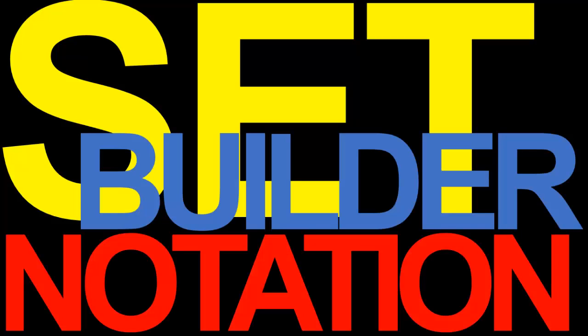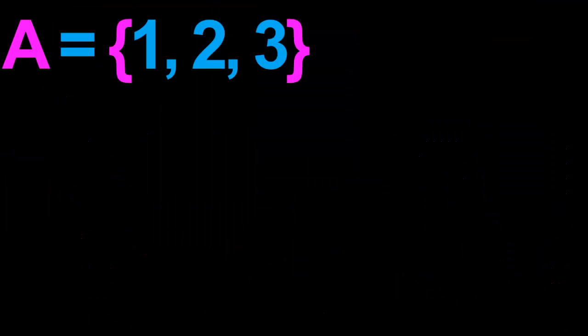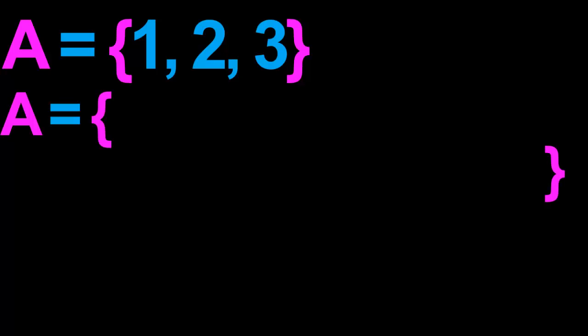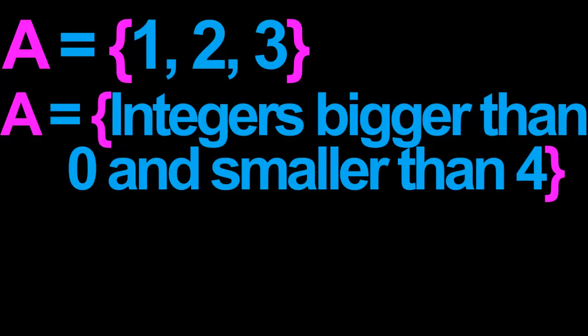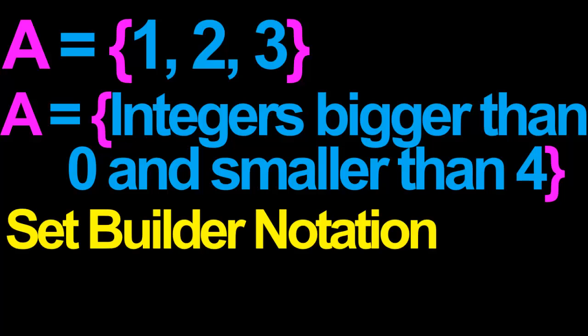Set Builder Notation. Suppose the set A consists of three elements: 1, 2, and 3. Another way we can describe the set A is to say that it consists of the integers which are bigger than 0 and smaller than 4. Another way to write out the set A is to use the so-called set builder notation.